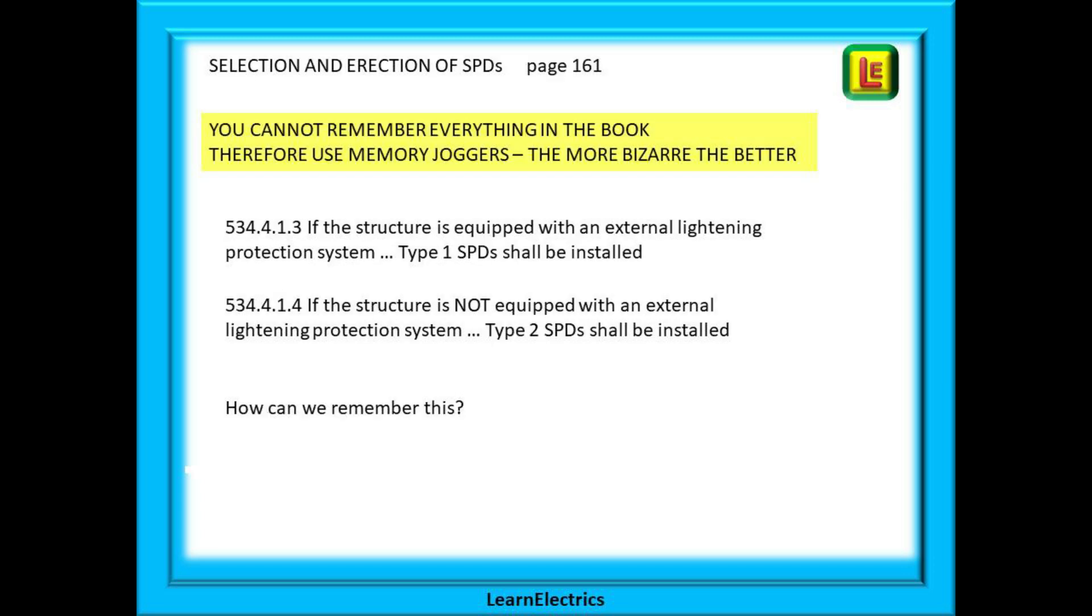You cannot remember everything in the book therefore learn to make up and use memory joggers. The more bizarre the better and here is an example to do with the selection and erection of SPDs on page 161. The two regulations shown talk about type 1 and type 2 SPDs but how can we remember which is which?